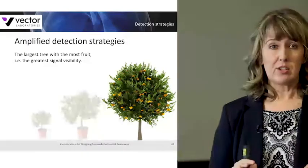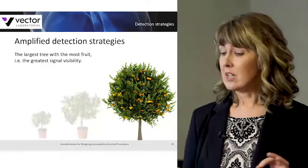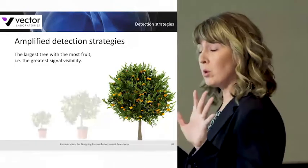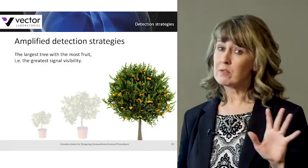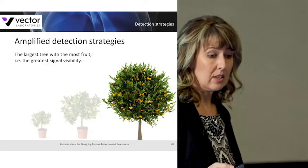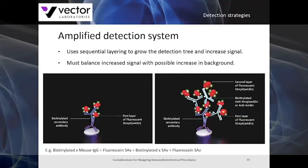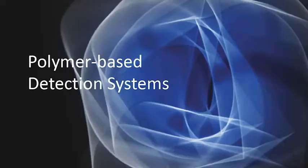The third type are amplified detection strategies — the largest tree, with the most branches allowing for the most fruit, thereby translating to the highest sensitivity. In amplified detection systems, you apply your detection reagents sequentially to build branches of your tree, depositing more fluorophore or enzyme at the site of your target antigen. However, you must balance the increased signal with the possibility of increasing background due to the additional reagent additions.